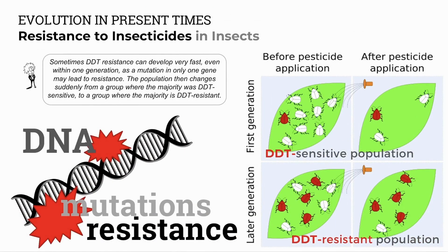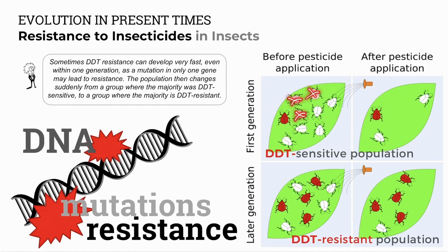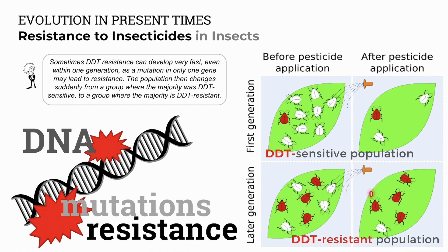DDT resistance in a population may develop very fast if caused by one mutation. In this diagram, the first generation is mostly DDT sensitive. Rapid reproduction may cause a mutation that makes an insect resistant. After DDT application, most insects die out except the mutated resistant forms. Later generations with more DDT applications result in more mutant forms surviving and the development of a DDT resistant population.